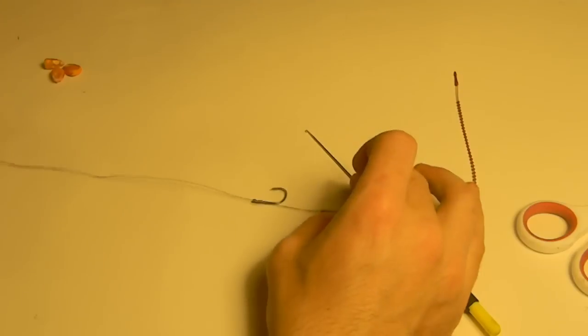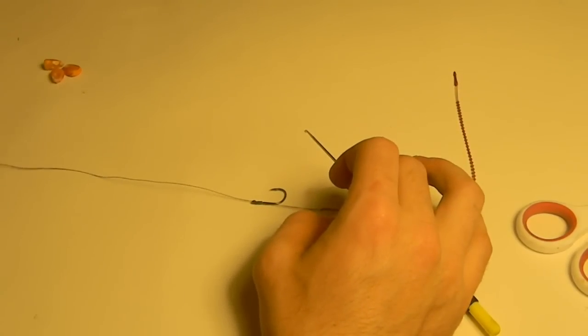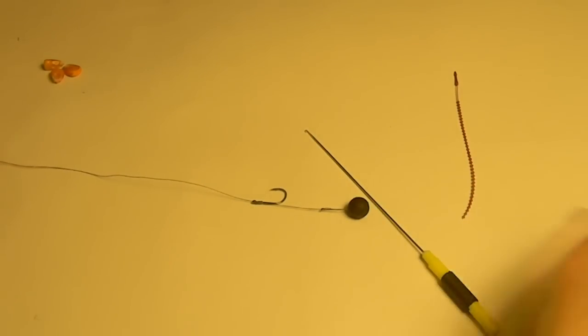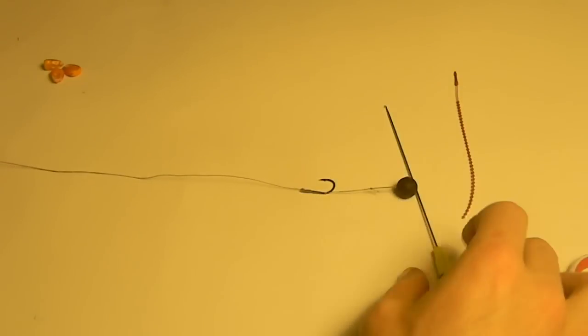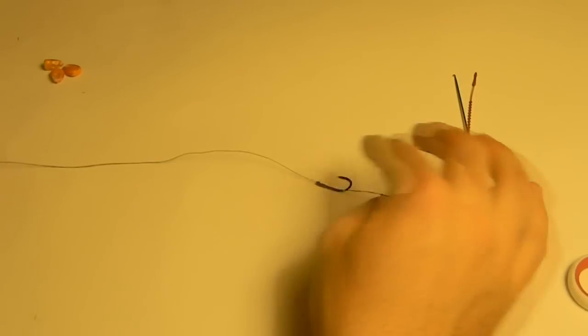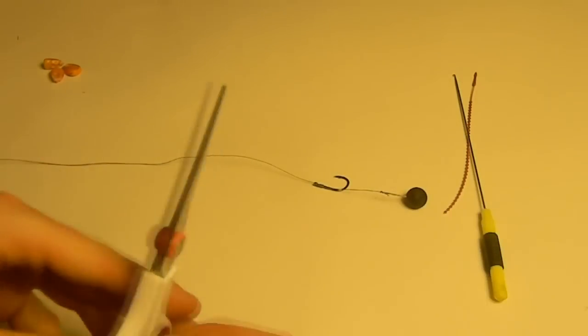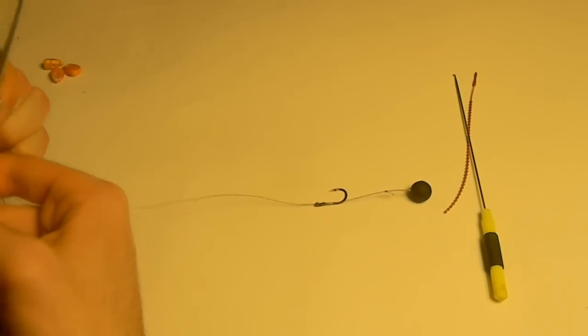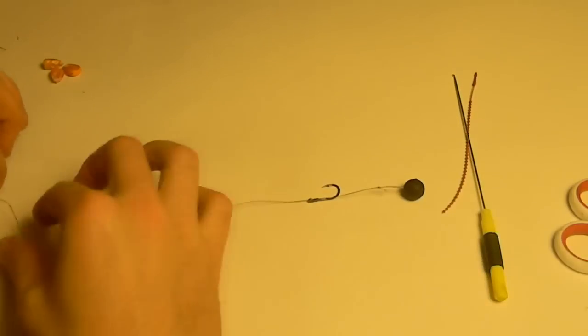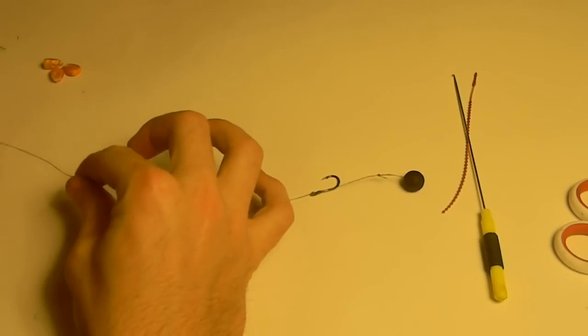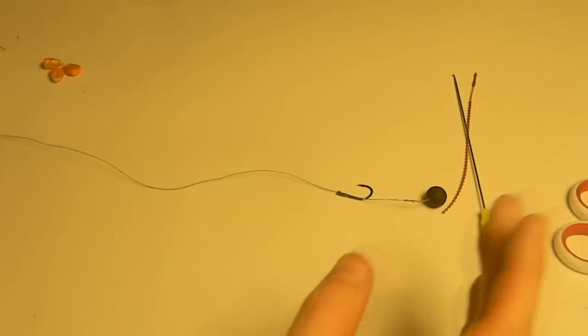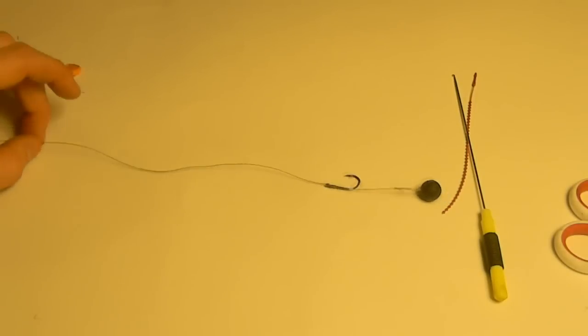Then you're going to attach your line to your rig, and you're going to adjust your rig length. Again, we could talk about rig lengths for however long we wanted, but I recommend something between 8 and 12 inches. So you're going to come up here, you're going to cut between 8 and 12 inches off, and you're going to attach it to your main line, you're going to attach it to your swivel, whatever it is you choose, and this is your basic hair rig. You are ready to fish from here.